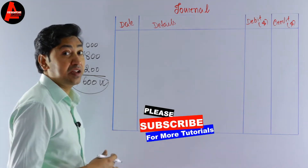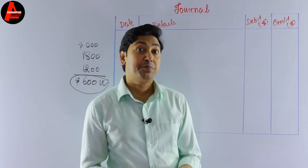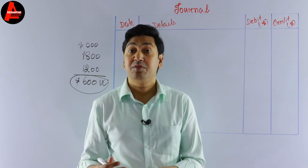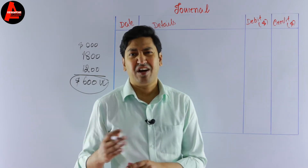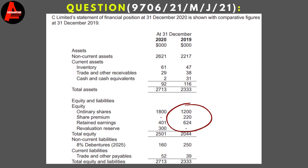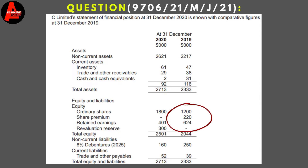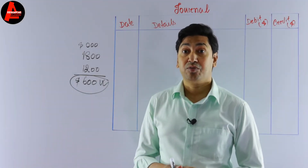A company can issue bonus shares from different types of funds — maybe from the share premium, or from reserves such as general reserve, retained earnings, or other reserves. In the question we have share premium of 220,000 dollars in 2019, retained earnings of 624,000 dollars in 2019, and a revaluation reserve of 300,000 dollars which appears in 2020 only. So the company issued bonus shares from these funds.